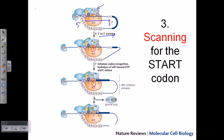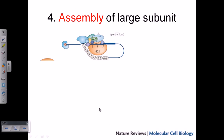After the first fMet-tRNA binds to the P site at the AUG codon, eIF2 — the factor that brought the first fMet-tRNA — hydrolyzes its GTP, properly places the tRNA, and is then released. This completes the third stage. The fourth stage now begins: assembly of the large 60S subunit.